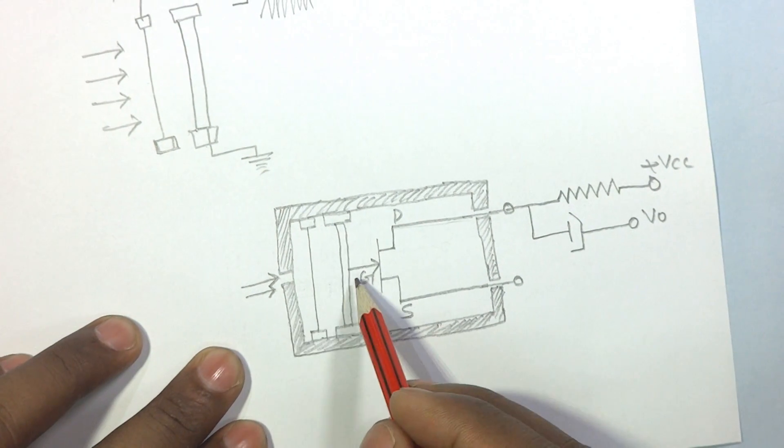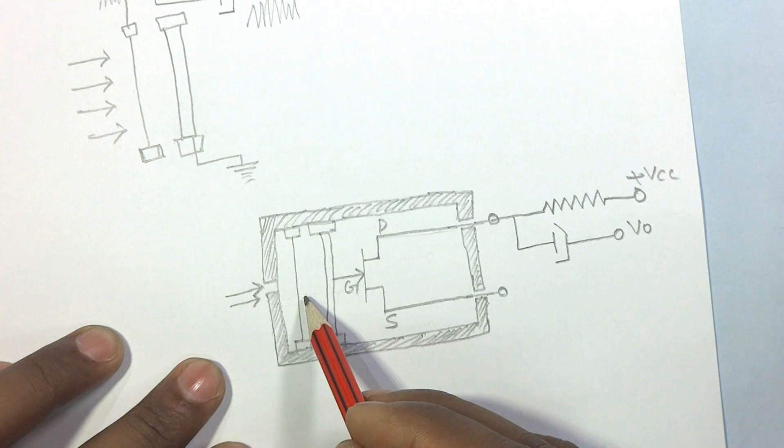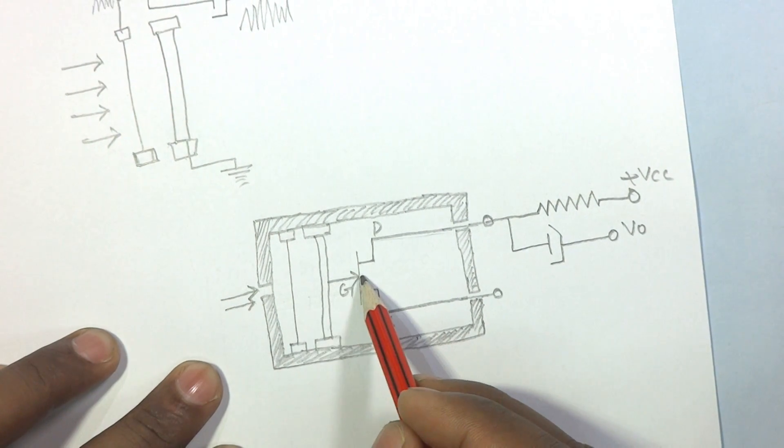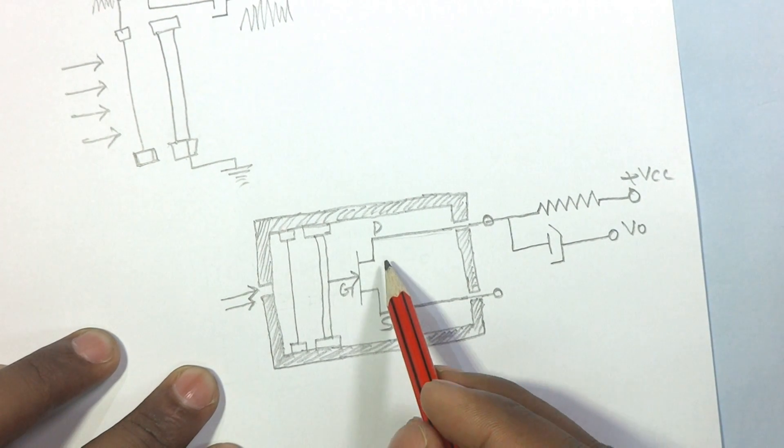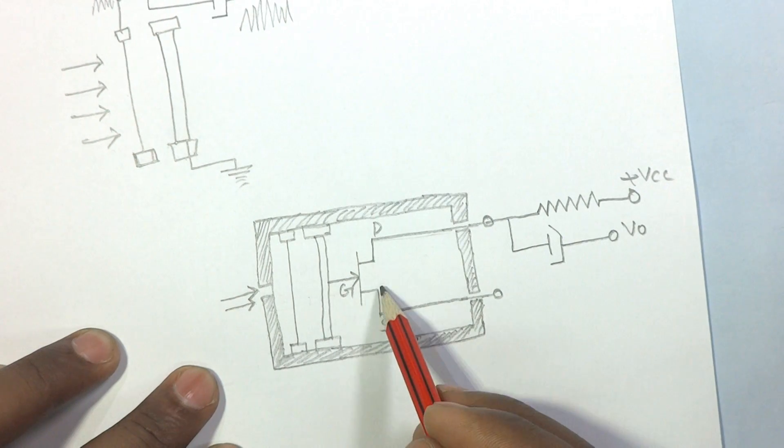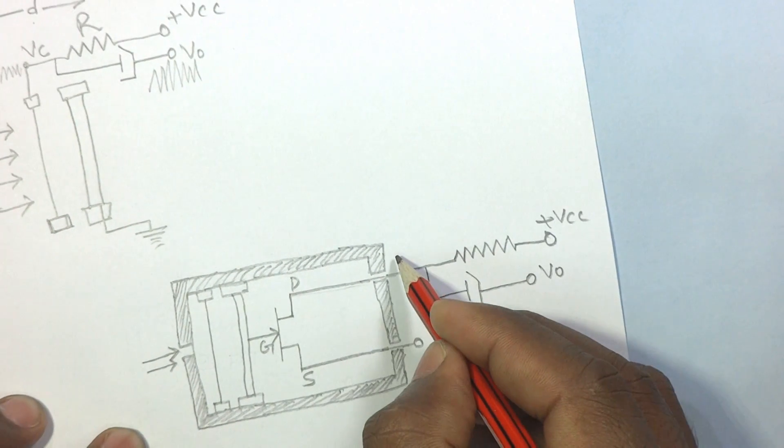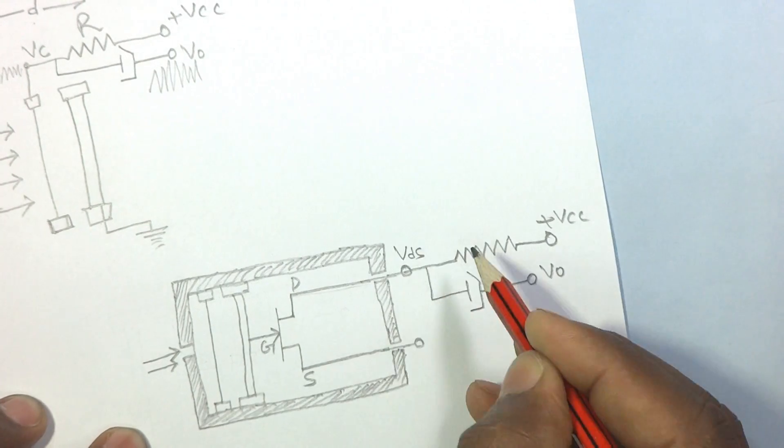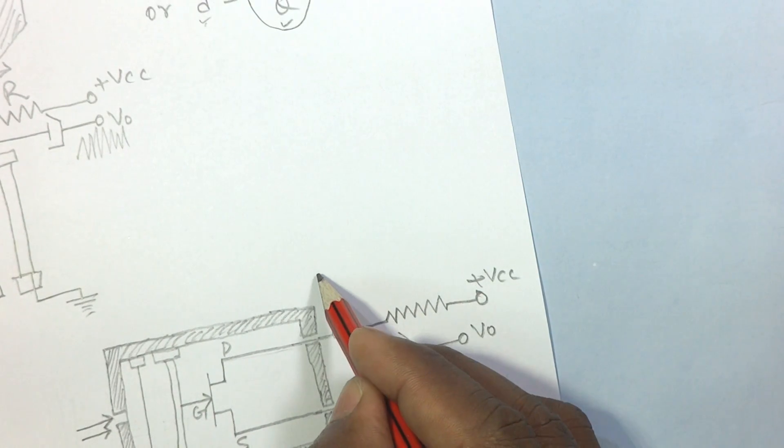So the voltage across this capacitor will vary. This changing voltage is applied to the gate of the FET. The resultant VDS voltage varies as per the sound pressure. Suppose this voltage is VDS, we get a signal like this.